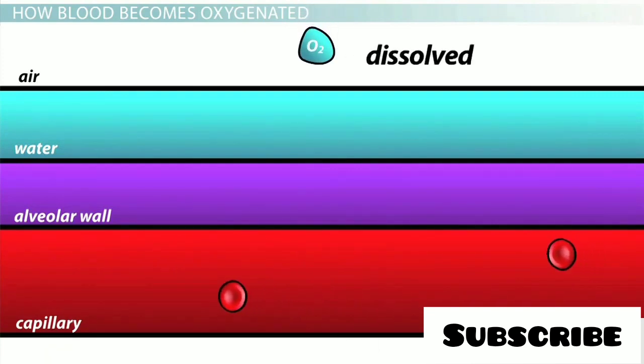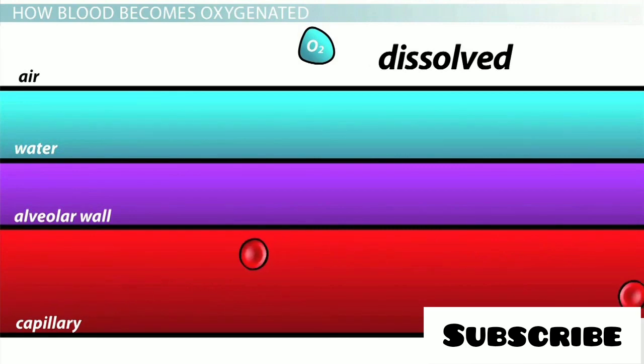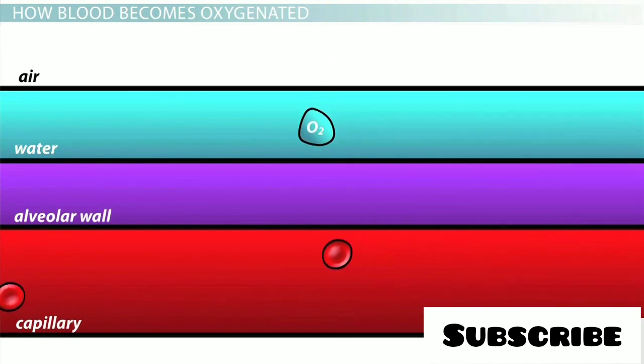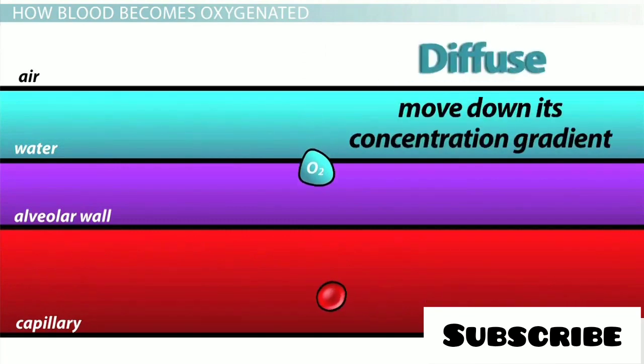First, the oxygen has to be dissolved, so there is a thin film of water coating the inside surface of the alveoli. Because the volume of water is so small, it becomes saturated with oxygen almost instantly, and the oxygen is then free to diffuse across the cell membrane.